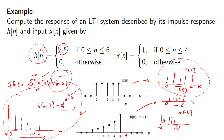One approach is to change n incrementally — setting n equal to minus infinity, then minus 4, minus 3, minus 2, and onward — but that takes a lot of time. A more convenient method is to identify a subset of values and use intuition to develop the summation function for each case.